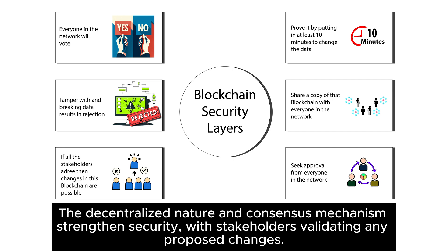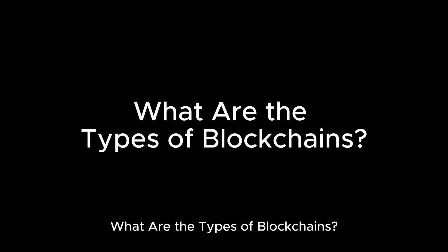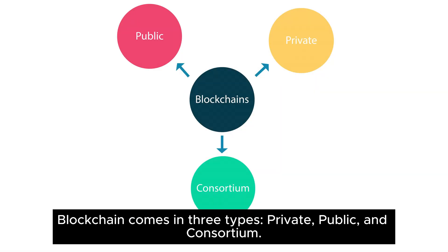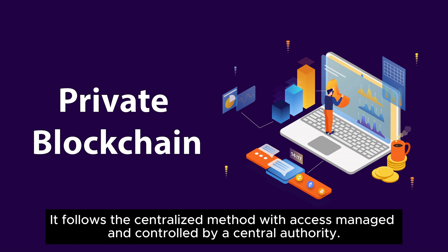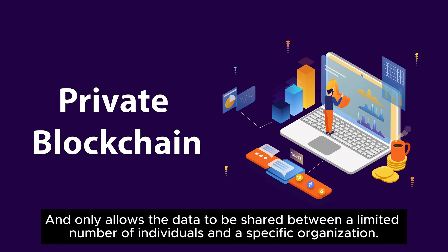The decentralized nature and consensus mechanism strengthen security, with stakeholders validating any proposed changes. Blockchain comes in three types: private, public, and consortium. Private blockchain follows a centralized method, with access managed and controlled by a central authority, only allowing data to be shared between a limited number of individuals within a specific organization.